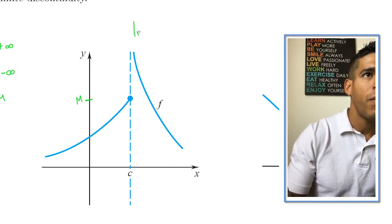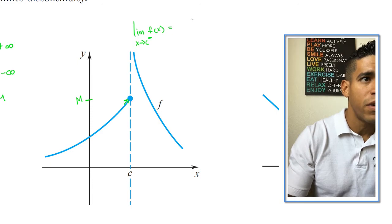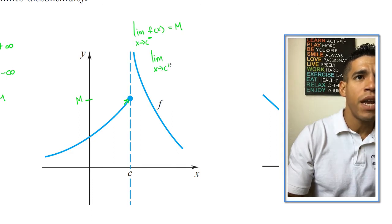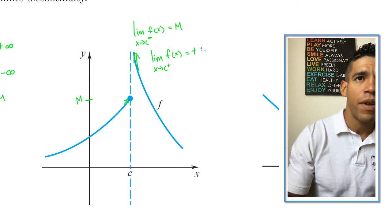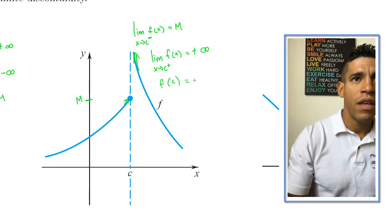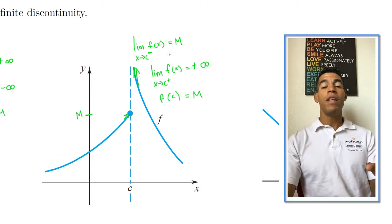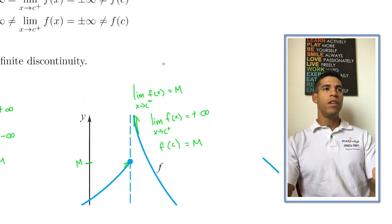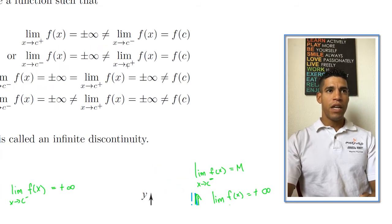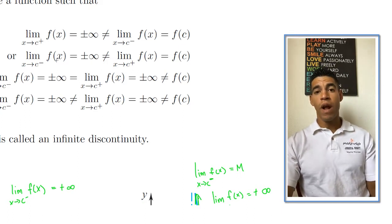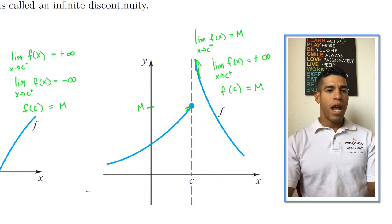For the next example, the limit as x approaches c from the left of f(x) equals some value m. The limit as x approaches c from the right equals positive infinity. And f(c) is also m. So the left-side limit equals f(c), but the right-side limit equals positive infinity — this matches the first condition.